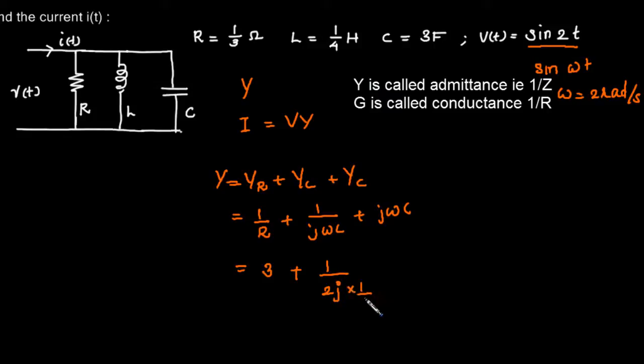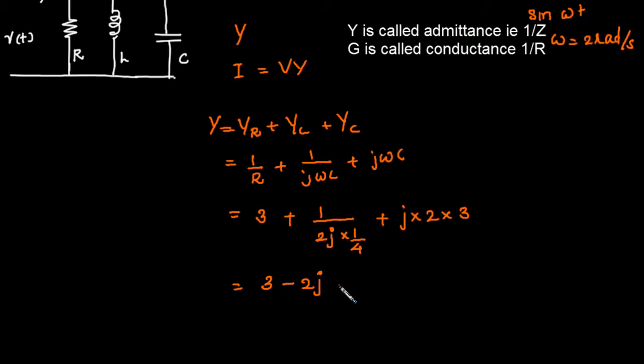Into 1/4 plus what is jωC? j into 2 into what is the value of capacitance? It is 3, there is 3. Minus 2j, 2 and 2 will cancel so it will be 3 minus 2j plus 3 into 2 that is 6j. That will be 3 plus 4j.